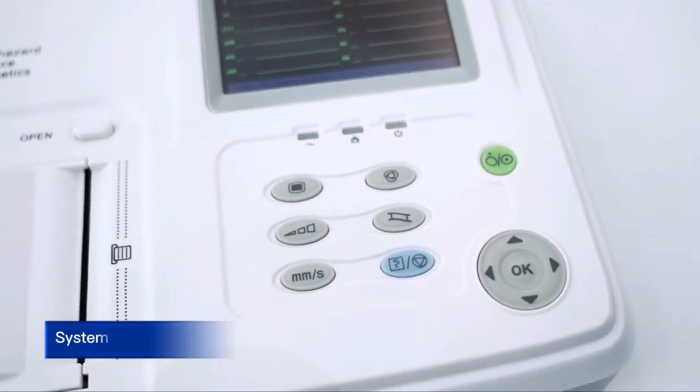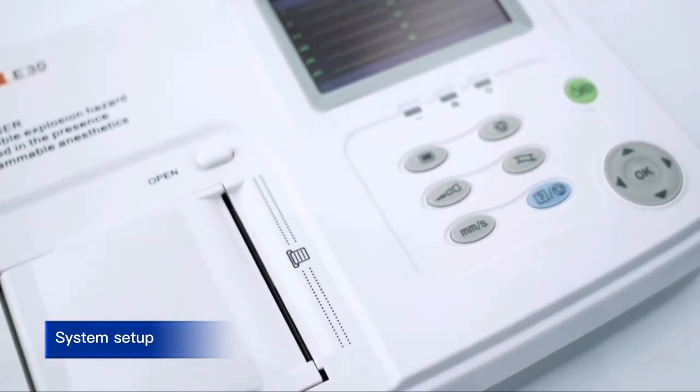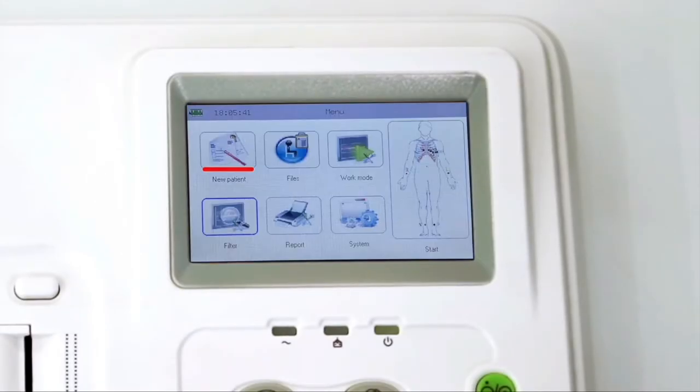The second part of this clinical user training will cover instructions for the recommended system setup to be completed prior to using the device for the first time. Press the menu key and press new patient in main menu to enter patient info setup interface. Ensure the following boxes are filled up: patient ID, name, gender, and age.